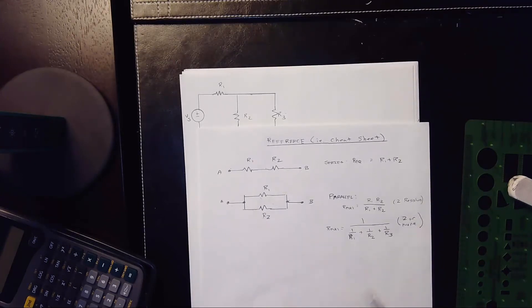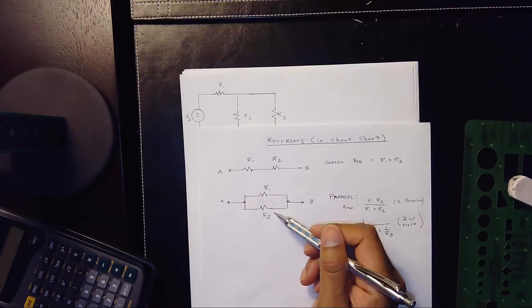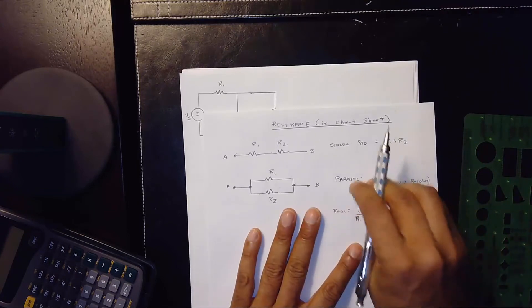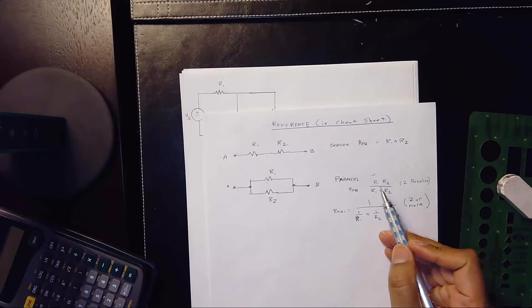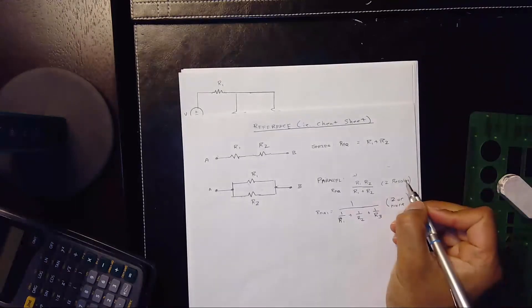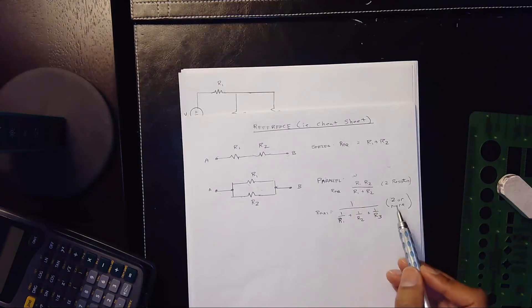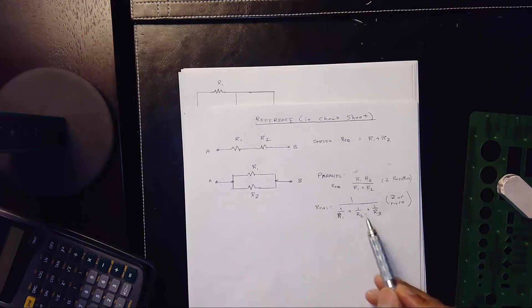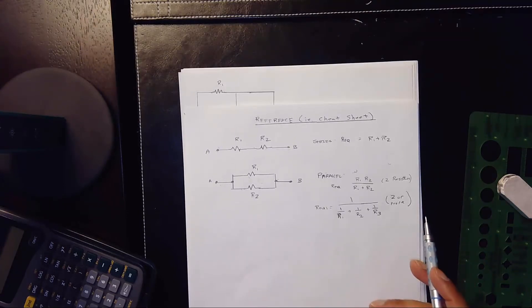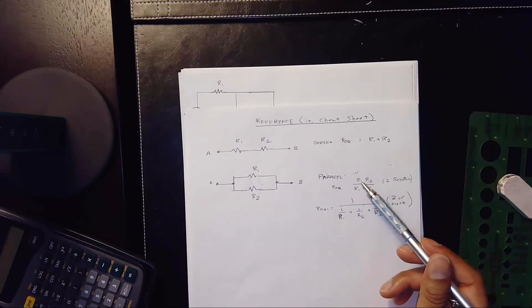If the circuit splits one-to-one, it is parallel. The parallel equivalent resistance for two resistors is REQ equals R1 times R2 divided by R1 plus R2. If you have three or more resistors — R1, R2, R3, R4 — you use the reciprocal sum equation. For most problems, you'll use the two-resistor formula more often.